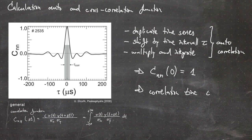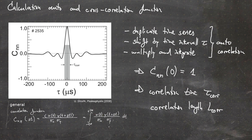The auto correlation function allows us to deduce the correlation time tau_corr. Equivalently, a spatial auto correlation function — shifted in space rather than time — would give us the correlation length L_corr from an equivalent measurement in space. The cross correlation function does the same but using density and potential. The cross phase obtained from the cross correlation is an important quantity for the transport, as we discussed in the last video.